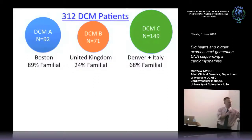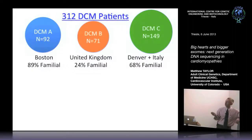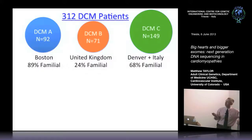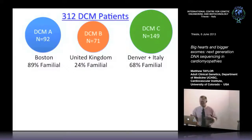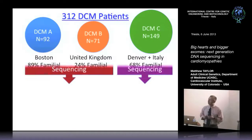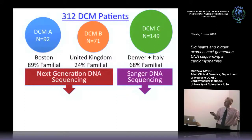One population was mostly a genetic form — young individuals, many with family members who also had dilated cardiomyopathy. A second population had more transplants but fewer with family history. The third population was partly from Denver, Colorado and partly from Italy, including patients locally from Trieste. We combined these three populations and asked what Titin mutations they had — what was the needle in the haystack. We used traditional Sanger sequencing for older families and next generation sequencing for the more recent ones.